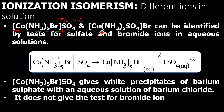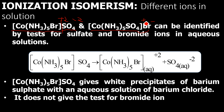Another compound with the same molecular formula — [Co(NH₃)₅SO₄]Br — has the Br⁻ outside the square bracket. When dissolved in water, it gives Br⁻ and [Co(NH₃)₅SO₄]⁺ ions. Both these isomers produce different ions in aqueous solution and are therefore known as ionization isomers.